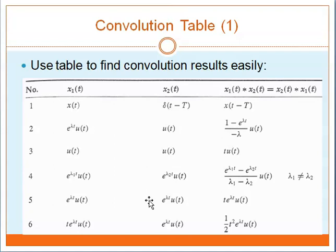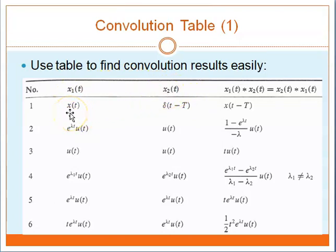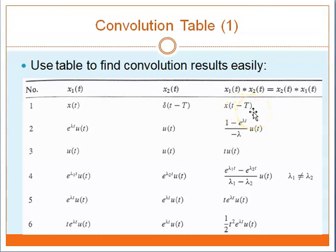Please go through the convolution table — this table will be given to you. To show the first example: if you have S1(t) and S2(t) and you convolute them, for the first entry, S1(t) is S2(t) and S2(t) is an impulse, specifically delta(t minus T). The result of the convolution would be S2(t minus T), shifted by the period T. Please go through all the entries in the convolution table and use it to find convolution results easily.